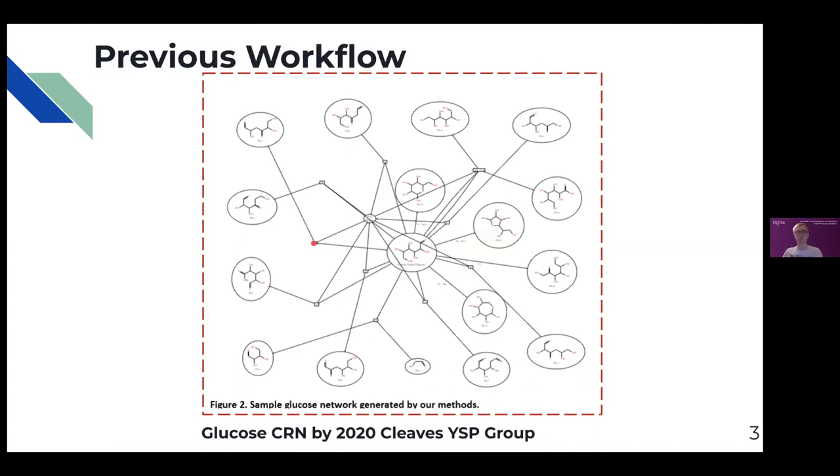To build up a CRN, the reaction rules are defined and then executed on a few starting or seed molecules. This process is repeated iteratively generation by generation to build up the network. The 2020 Cleves team investigated five different sets of chemistry through five different networks, each with a different set of starting seed molecules: formose ammonia, formose, glucose ammonia, glucose, and pyruvic acid.